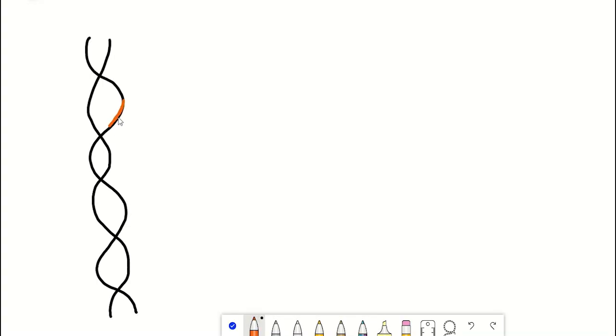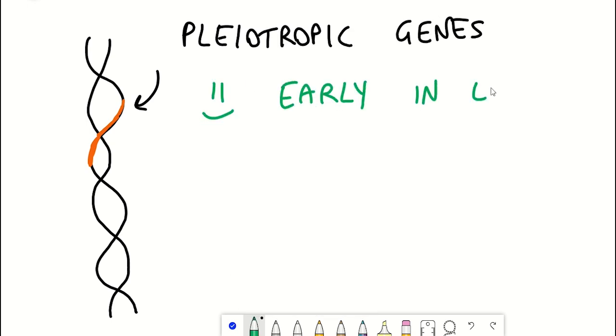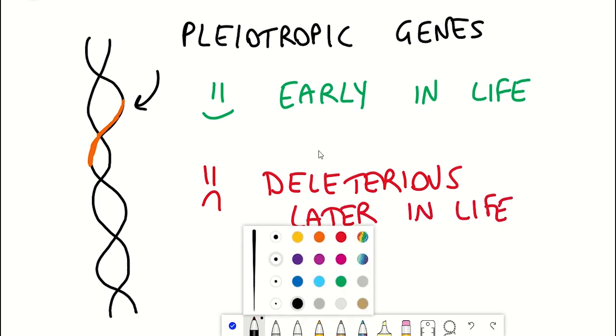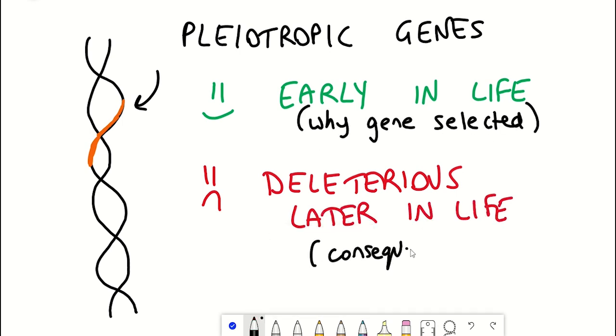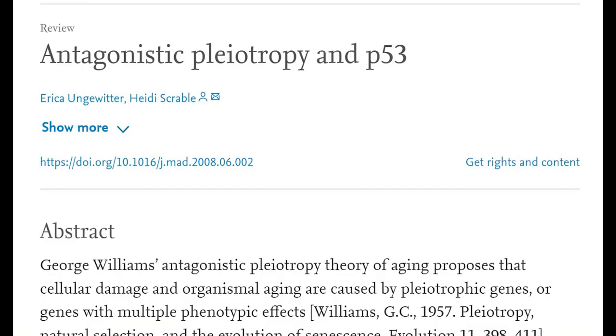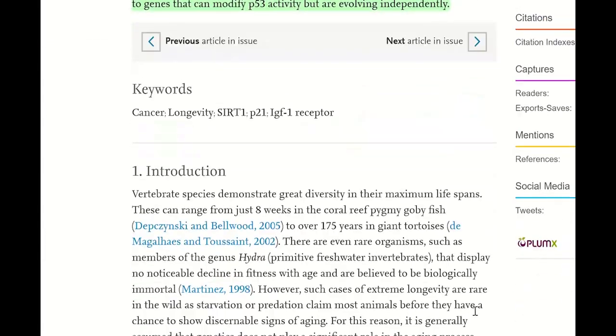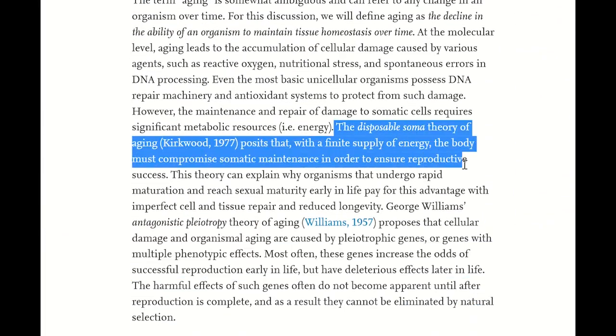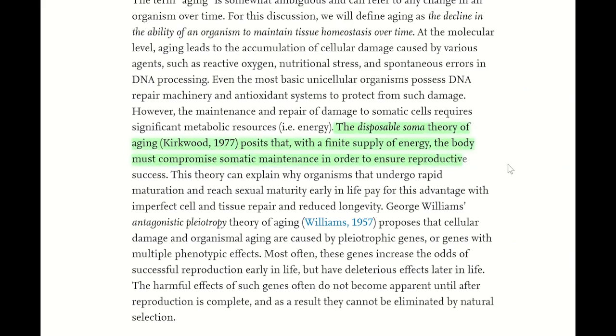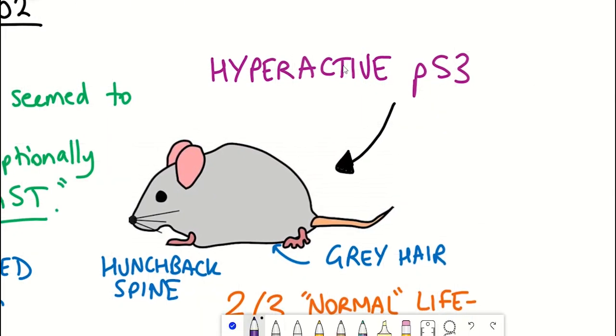And so P53 can be used as an example in this theory to show that it's beneficial early in life for protection against cancer but the deleterious effects later in life is that it may cause advanced aging. If you're interested in more this review article here goes into a lot more detail about it as it also discusses another evolutionary theory of aging which is the disposable soma theory. But going back to P53 how is it promoting aging?